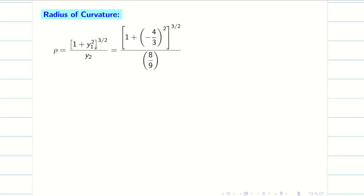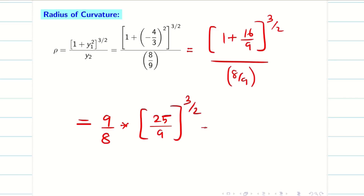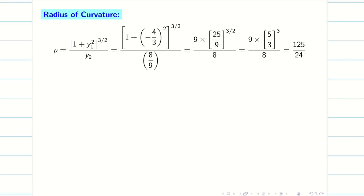Next we find the radius of curvature. Substituting y₁ = −4/3 into the formula: (1 + 16/9)^(3/2) / (8/9) = (25/9)^(3/2) · (9/8). Taking the square root of 25/9 gives 5/3, so (5/3)³ = 125/27, and multiplying by 9/8 gives 125/24. So the radius of curvature ρ = 125/24.